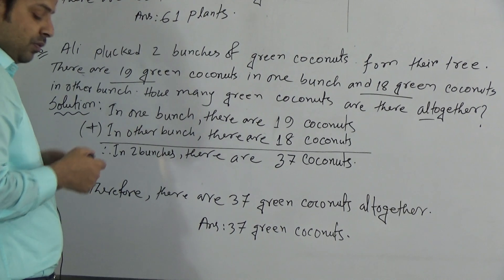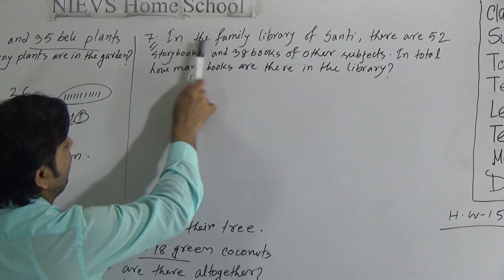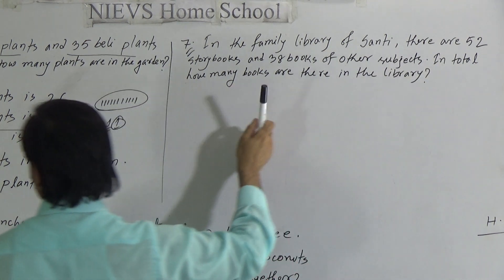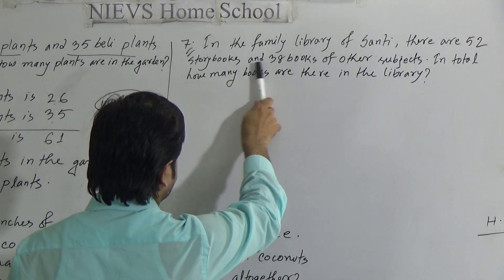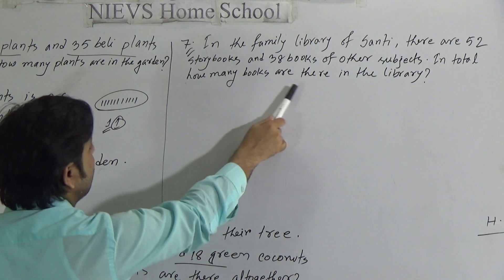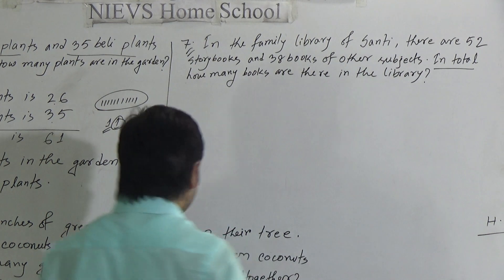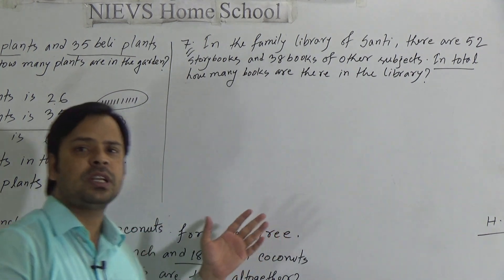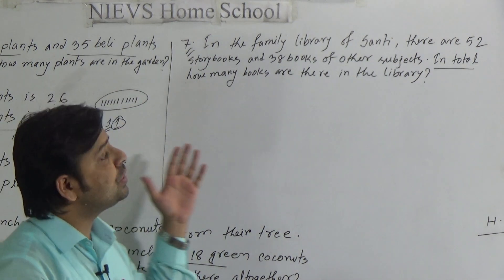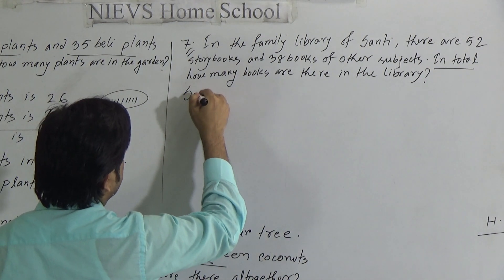Now I will solve word problem 7. In the family library of Shanti, there are 52 story books and 38 books of other subjects. In total, how many books are there in the library? As the word 'in total' is here, we need to determine the total number of books in the family library of Shanti. So we have to do addition. We can write here: solution.